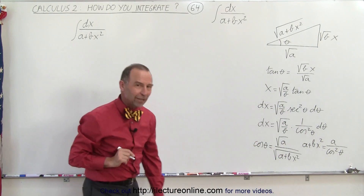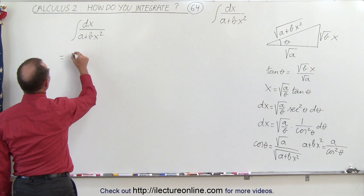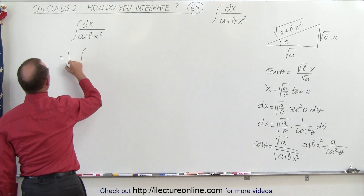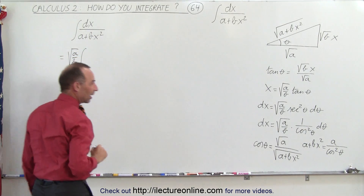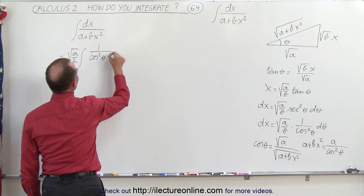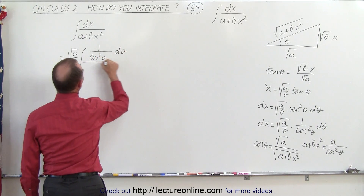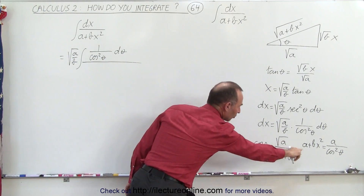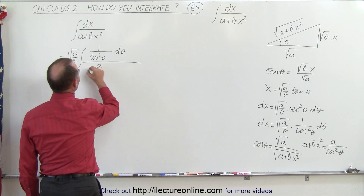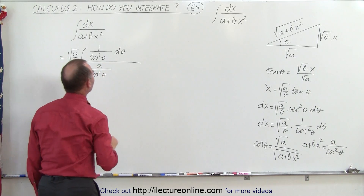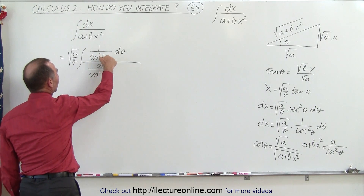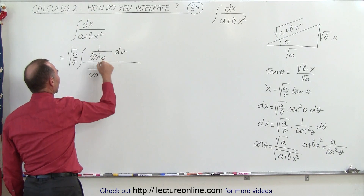Now we can go ahead and make those substitutions and see what we get. This is equal to the integral of — instead of dx, we put the square root of a over b outside the integral sign, and then we have 1 over the cosine squared of theta d theta in the numerator, divided by a plus bx squared, which is a over the cosine squared of theta. You can see that this becomes a very easy integral, because we have 1 over cosine squared of theta in the numerator and denominator, so these cancel out.